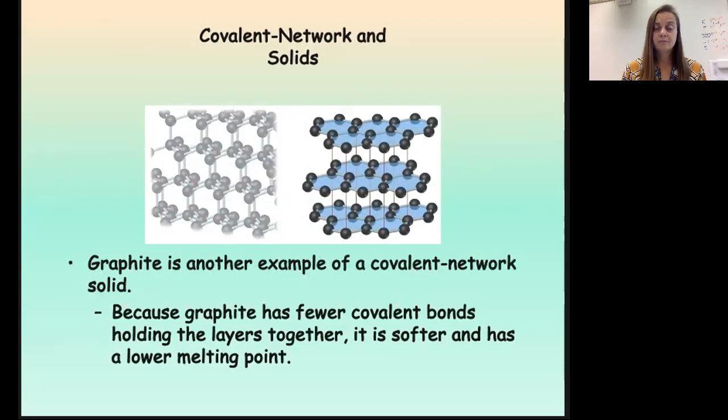Graphite has fewer covalent bonds, so it's softer. Those sheets tend to slide across one another, which is what makes graphite very useful as a lubricant. They also rub off of each other fairly easily, which is why graphite is what we use in our pencils.